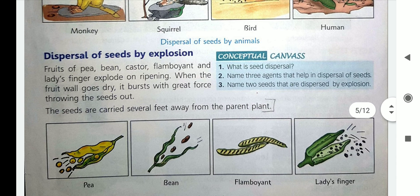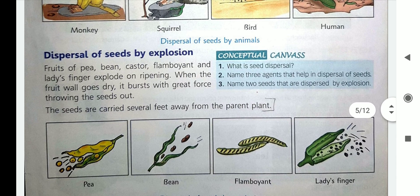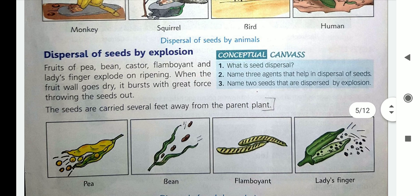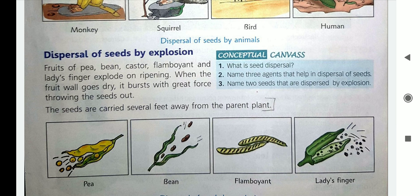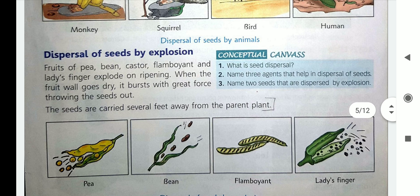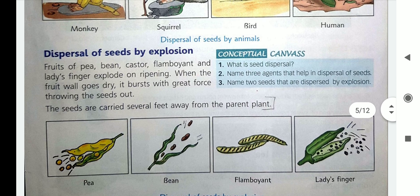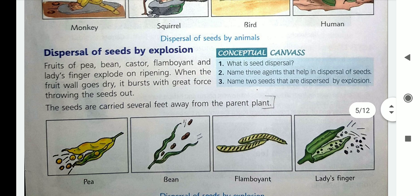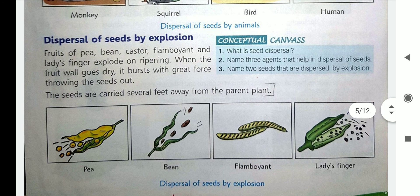The next agent of dispersal of seeds is explosion. Fruits like pea, bean, and ladyfinger explode when ripe. The fruit wall goes dry and it bursts with force. So the seeds are scattered here and there. When they get favorable conditions for germination, they grow into a new plant.